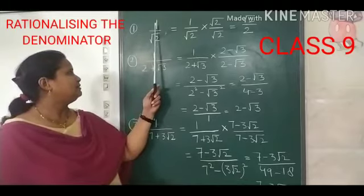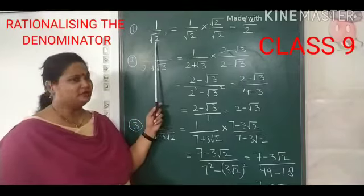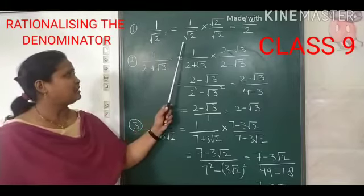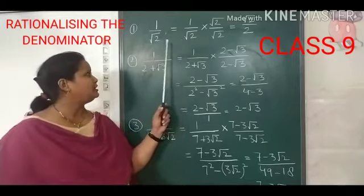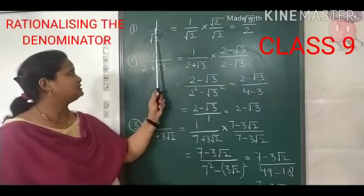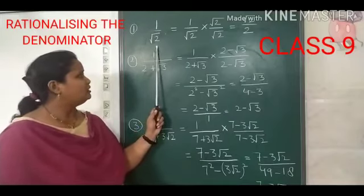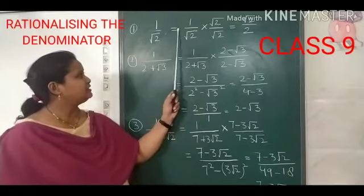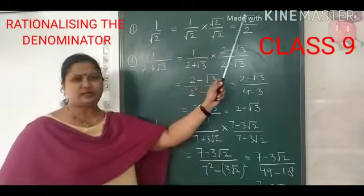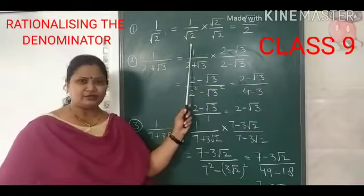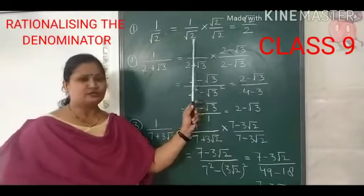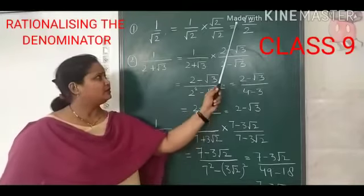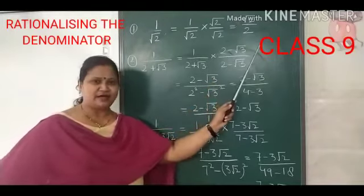Here, the irrational number is 1 upon root 2. If I want to rationalize this number, then I have to multiply both numerator and denominator by root 2, because root 2 is the denominator of this number. So I multiply root 2 in the numerator and denominator both. If I multiply 1 by root 2, I get root 2. And when I multiply root 2 by root 2, by the rules of multiplication of radicals, root 2 multiplied by root 2 becomes 2. So here, root 2 upon 2 is our required answer.